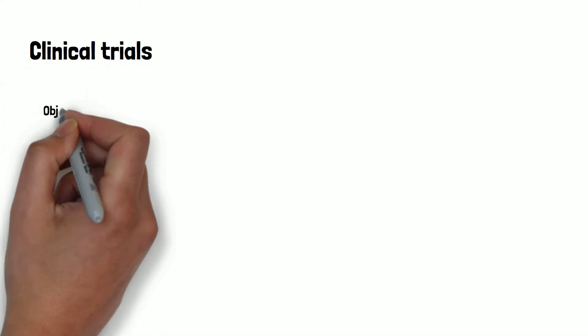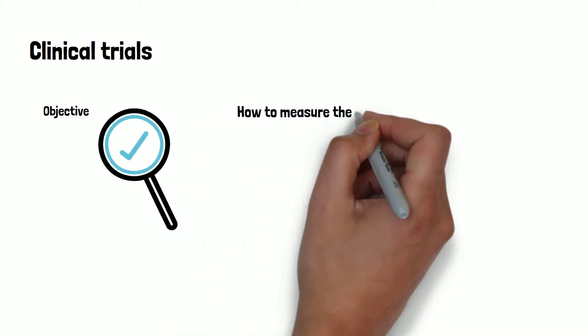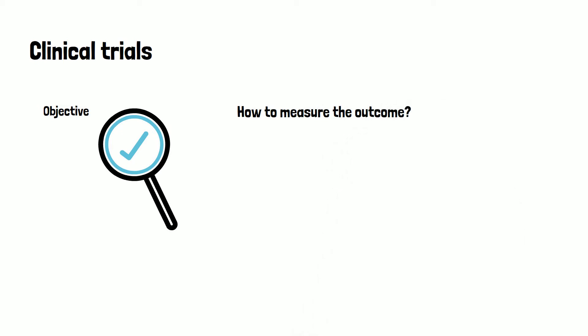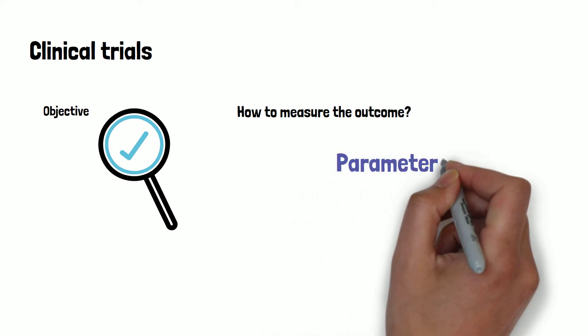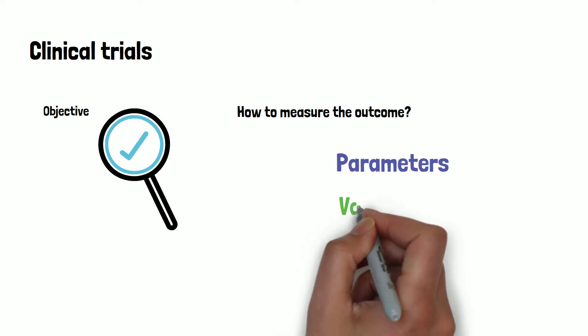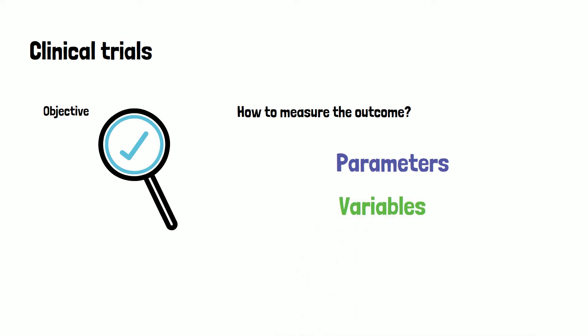The most important thing in clinical trial is to define the objective of the study. Once the objective has been defined, it has to be evaluated how best to measure the outcome. This is when biostatisticians start talking about parameters and variables. In today's video, we will explain what these are and how to differentiate them.